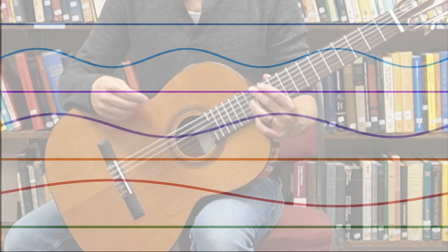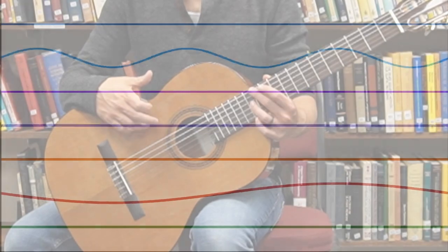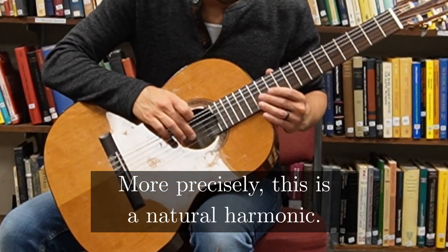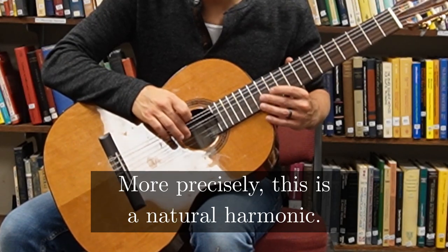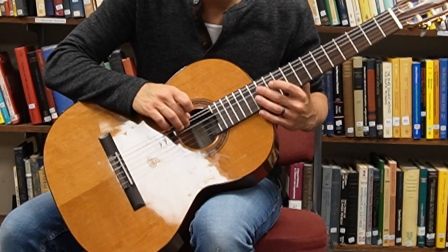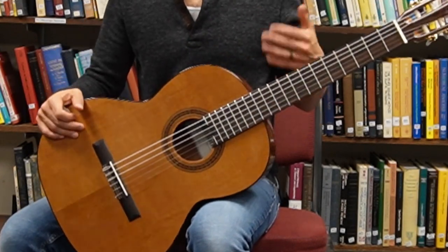However, the dominant tone and all the odd tones are silenced. This technique is known as playing a harmonic. For the guitarists who are watching, see if you can figure out how to play the second overtone while muting the dominant tone and the first overtone.